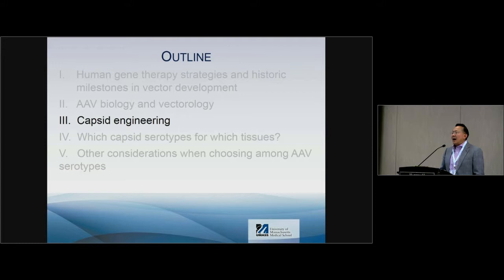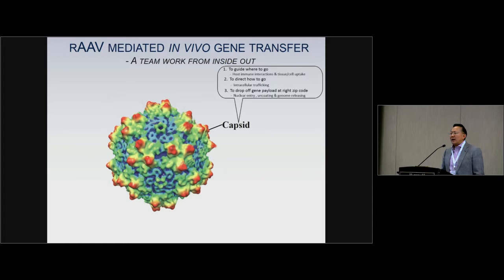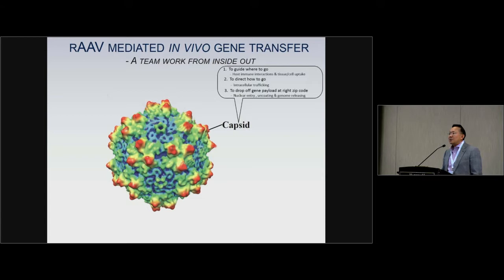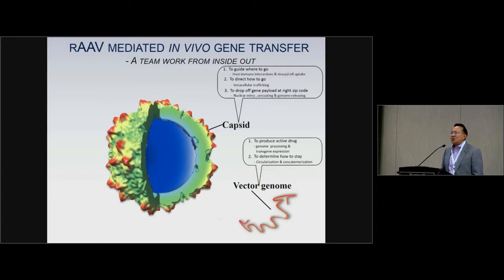Nowadays, there are many different strategies to engineer capsids, and for good reason. If you look at AAV, it's really a teamwork from the inside out. The capsid plays multiple roles: it guides where to go through cellular and immunological interactions and receptor binding; it directs how to get there through intracellular trafficking; and it drops your genome at the right location. However, the genome is also important — it provides the active drug and determines how AAV can persist permanently in a cell.